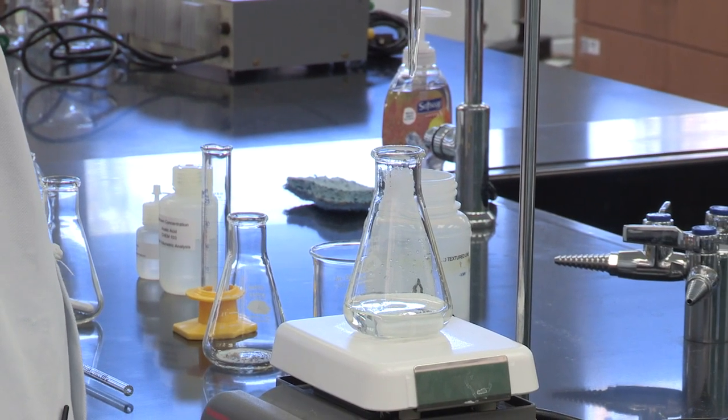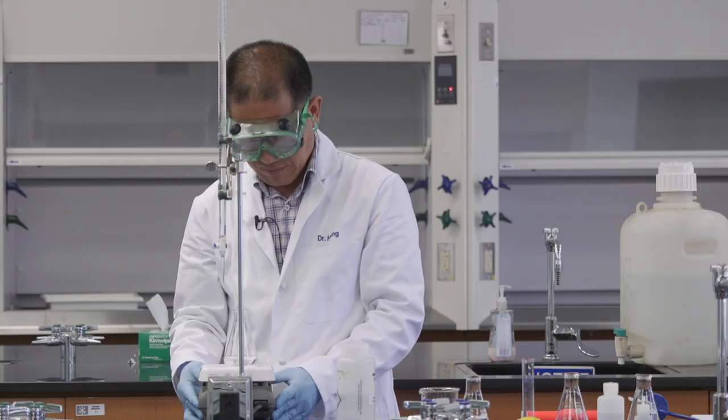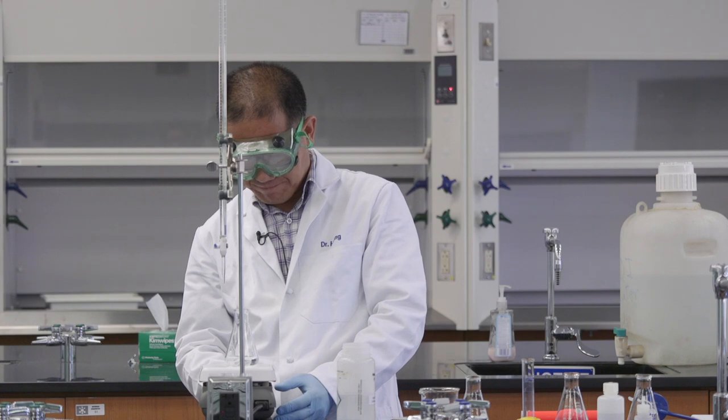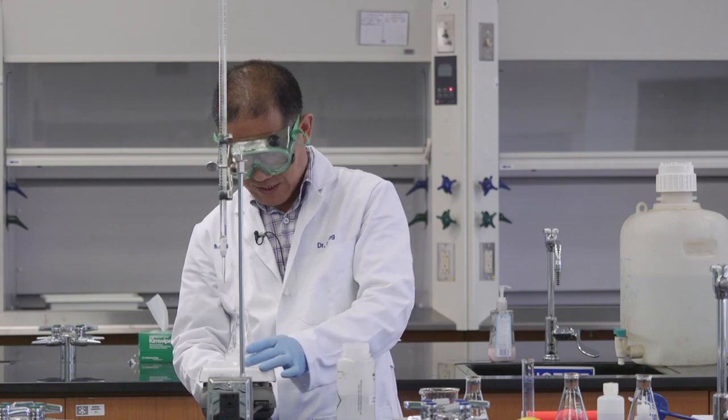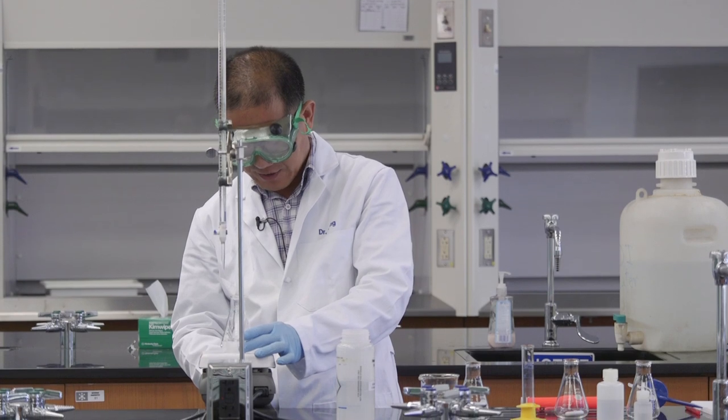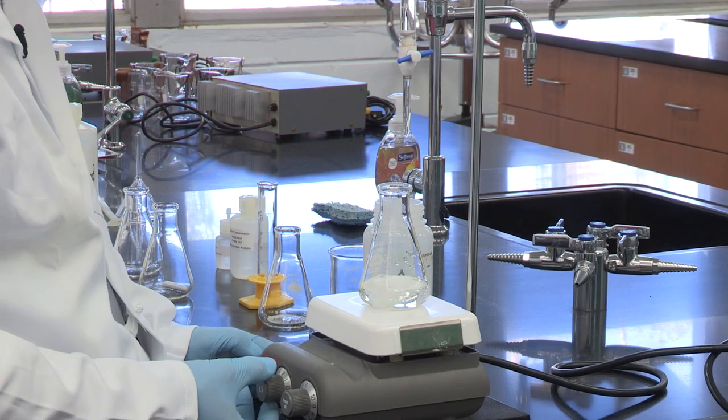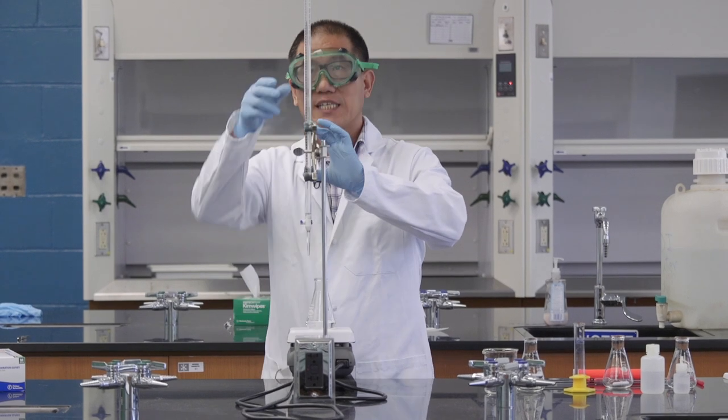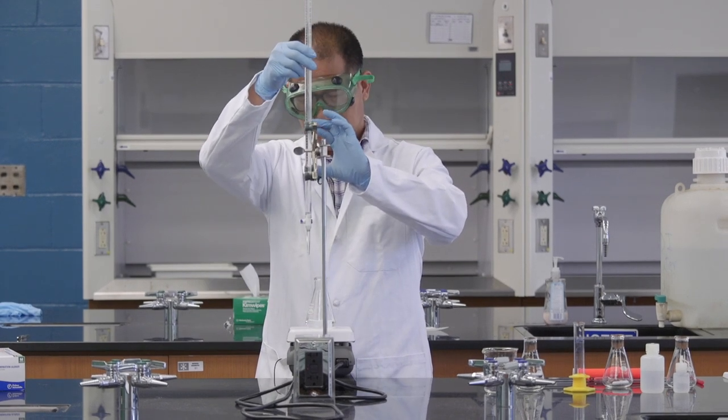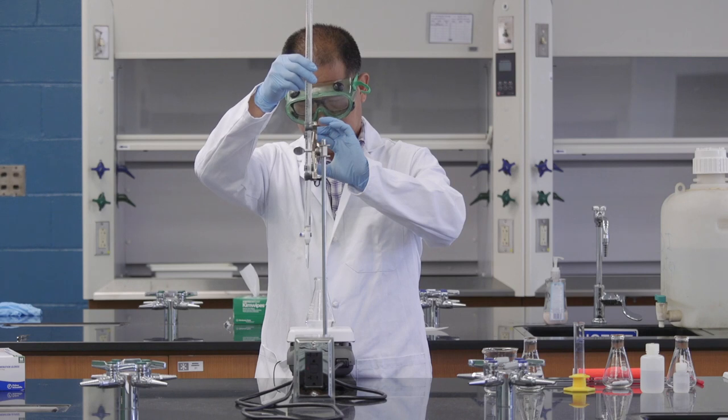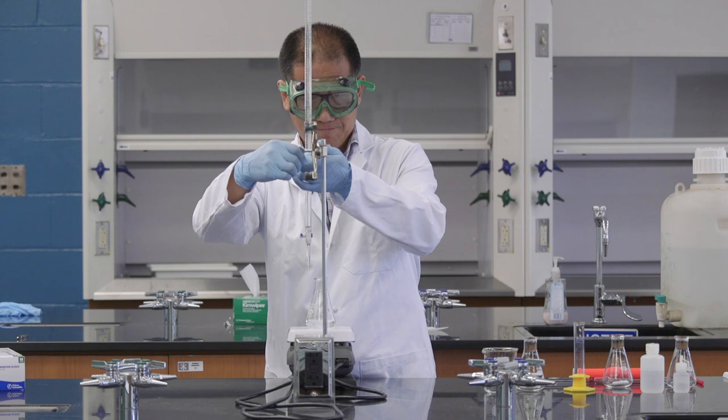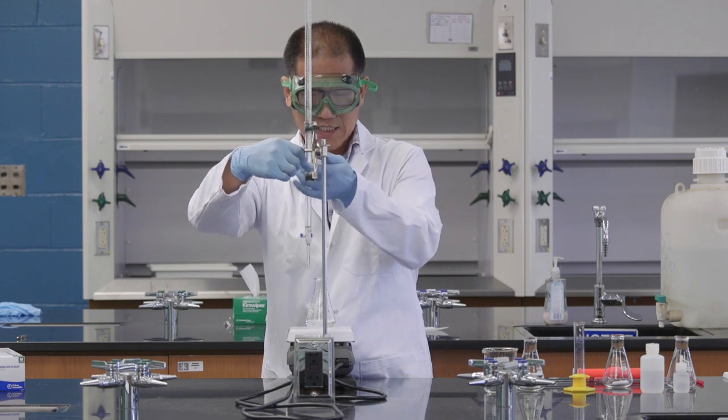Let me adjust the height of the burette, and then turn on the stir bar. Oh, okay, it's too violent, so I need to adjust the speed. Now, I'm going to adjust the height of the burette again. It seems I have adjusted the direction of this clamp.